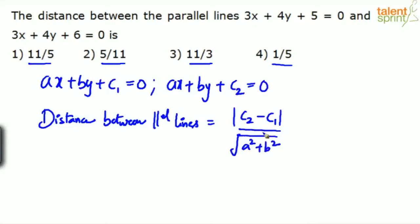This is like ax plus by plus c1 and same ax plus by plus c2. So we can say the required distance here will be equal to mod of c2 minus c1. Whether you take c2 minus c1 or c1 minus c2 makes no difference, because it is modulus, we have to take the positive value.